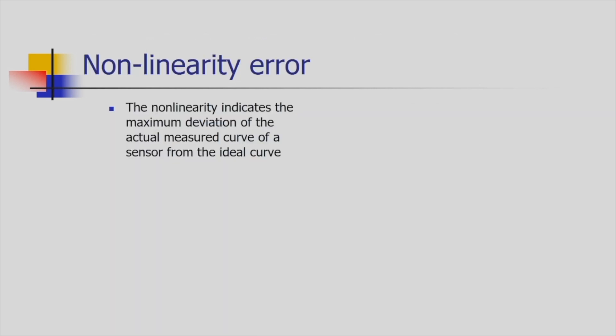The next term is non-linearity error. It indicates the maximum deviation of the actual measured curve of a sensor from the ideal curve. Sensors are designed and manufactured in laboratories where designers expect ideal behavior. But when sensors are used on the shop floor in real-life conditions, the conditions are entirely different — handling is different, there may be human-induced setting errors, environmental errors, or errors induced by the conditions in which sensors are used, causing non-linearity.